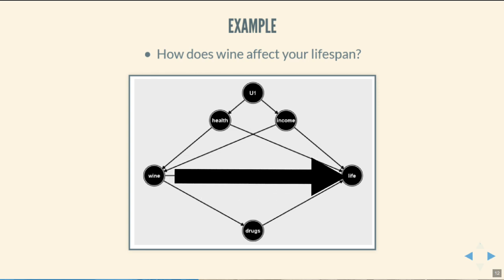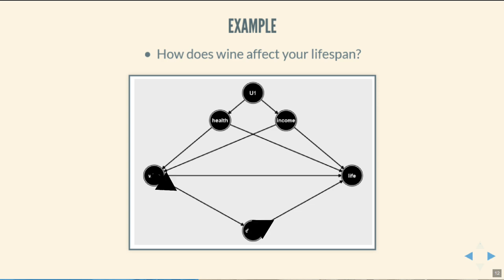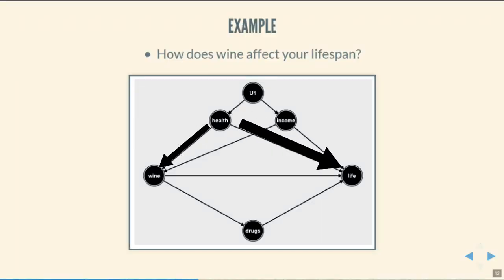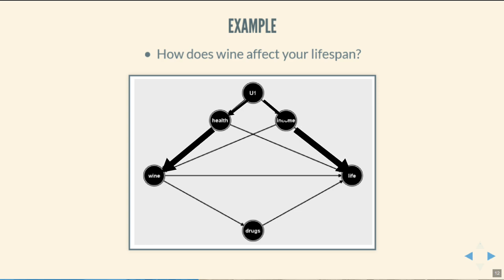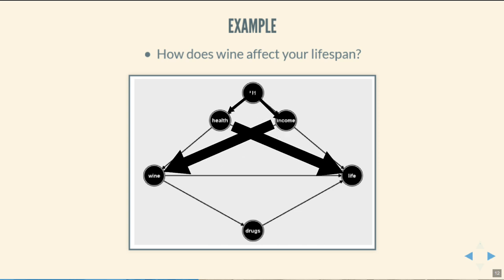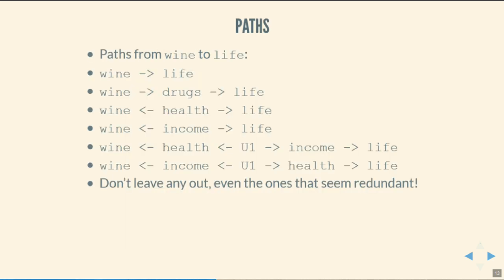We want to write out every single path we can walk from wine to lifespan. There's a direct path from wine to lifespan, and a path from wine to drugs to lifespan — both are front doors. We also have back doors: wine to health to lifespan; wine to income to lifespan; wine to health to U1 to income to lifespan; and wine to income to U1 to health to lifespan. That gives us the full list of every path we could possibly walk.